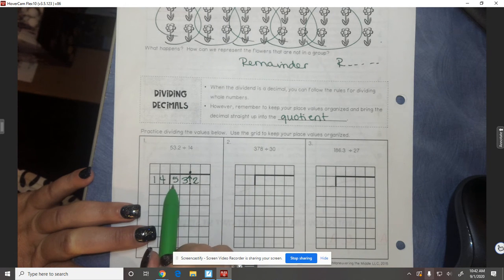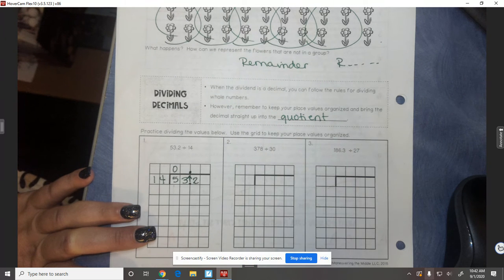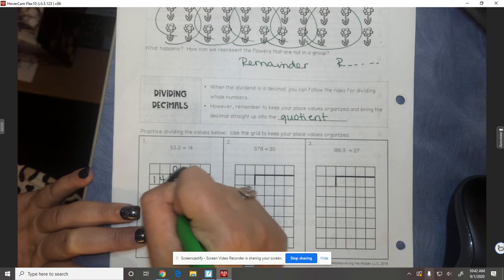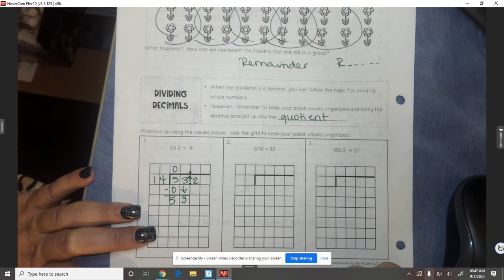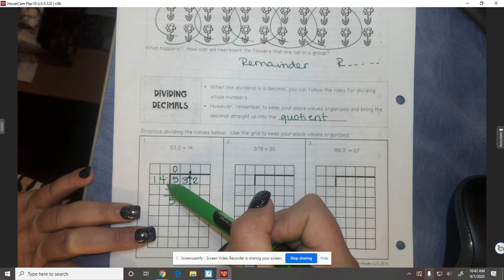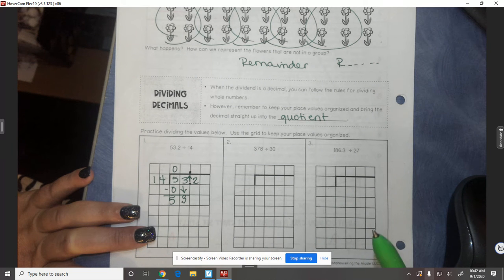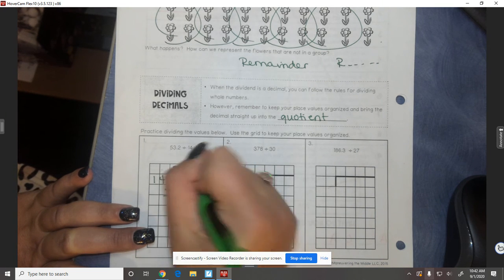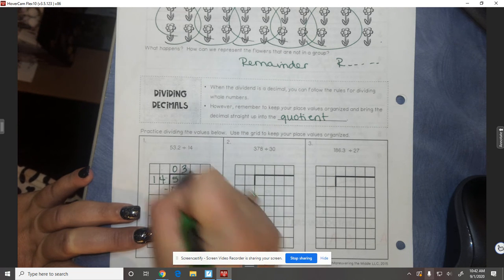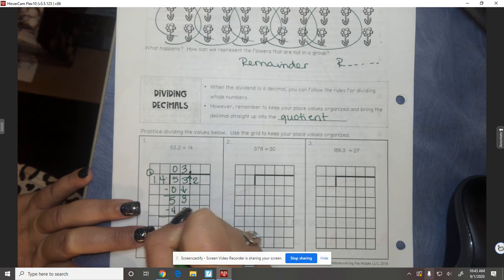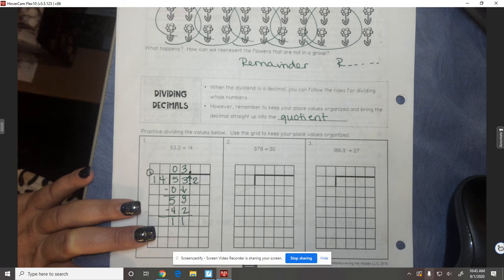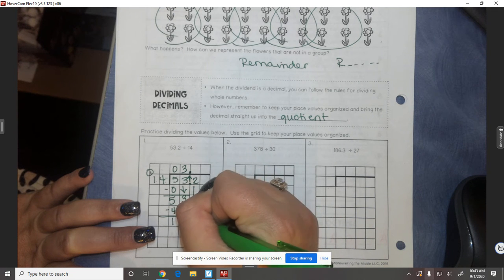So we're going to ask ourselves 14 going into 5, 0 times. 0 times 14 is 0. Bring down my 3. 14 going into 53, about how many times? Well, if we double 14, we get 28. If we double 28, we get 56 and that's too much. So we can't do 4. So let's try 3. 3 times 4 is 12. 3 times 1 is 3 plus 1 more is 4. So when I subtract, I end up with 11. So my next step is to bring down the 2.